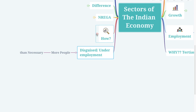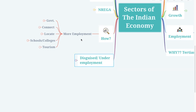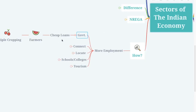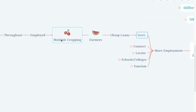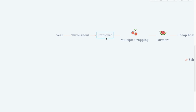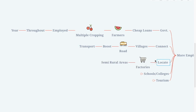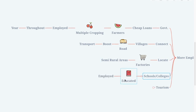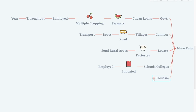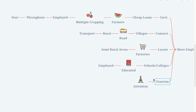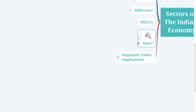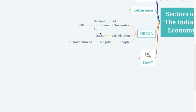Let's look at disguised or underemployment — it means there are more people in agriculture than necessary. More employment can be created when the government provides cheap loans to farmers so that multiple cropping happens and farmers are engaged throughout the year. Constructing roads in villages will help boost transport; locating factories in semi-rural areas, starting more schools and colleges, and giving attention to tourism will also create more employment.